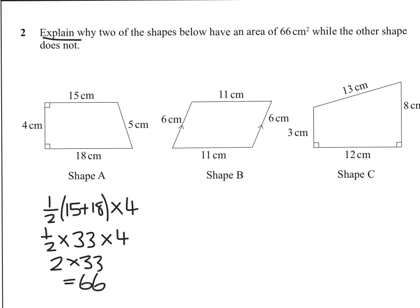Second shape is a parallelogram, and the area of a parallelogram is base times height. So that's 11 times the height. We can't work out the height, but we know that the height will be less than 6, and that's because the slant edge is 6. So the area will be less than 11 times 6, which is 66.